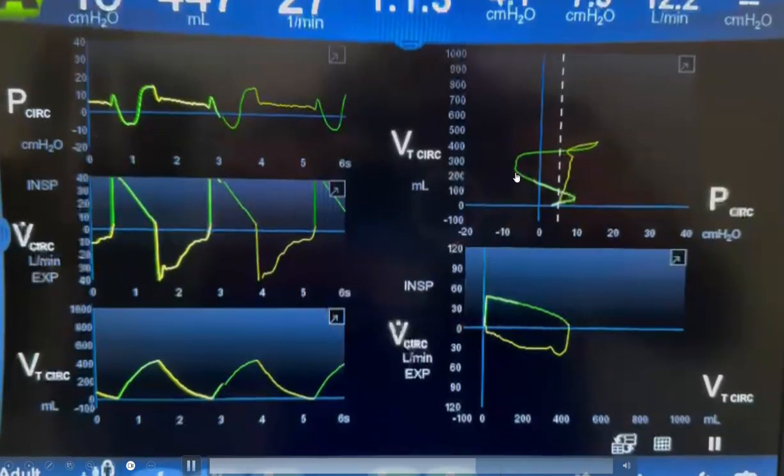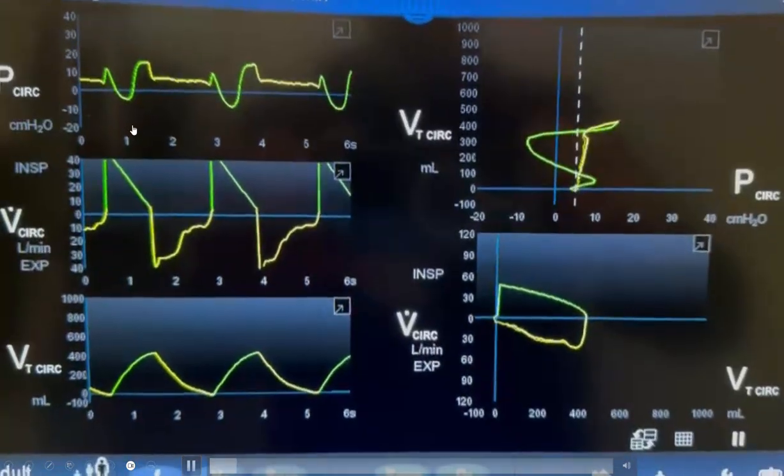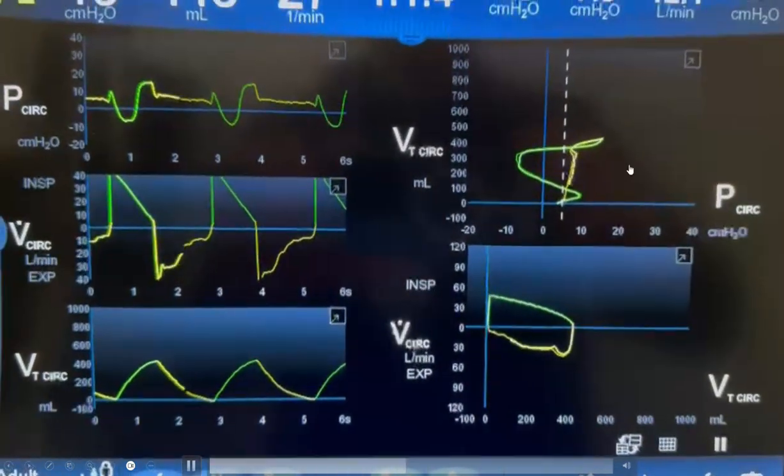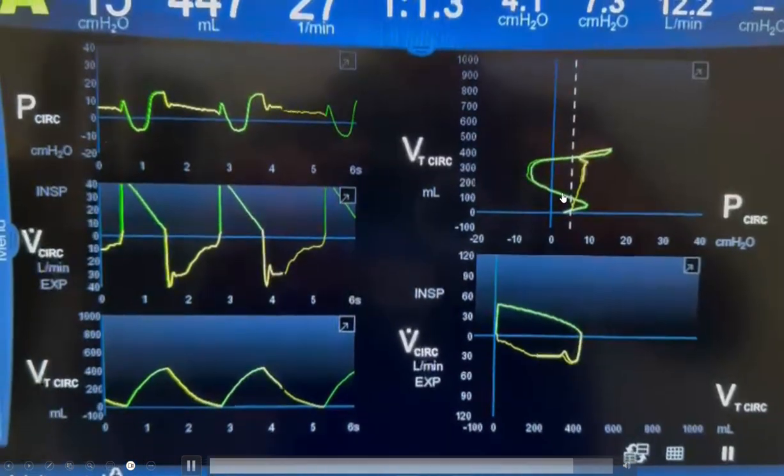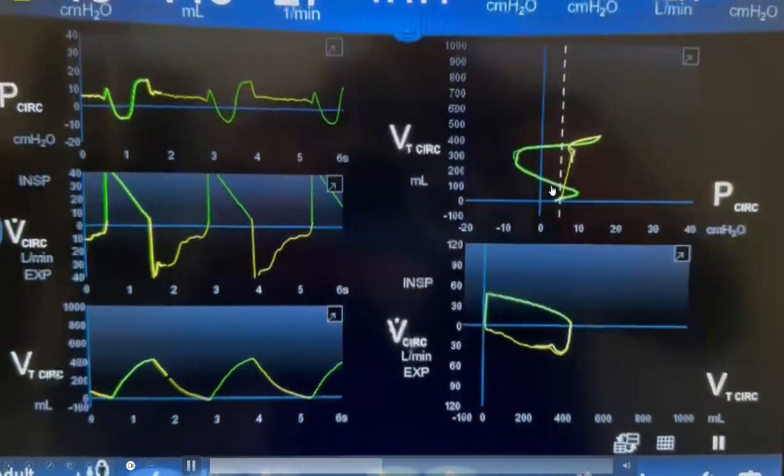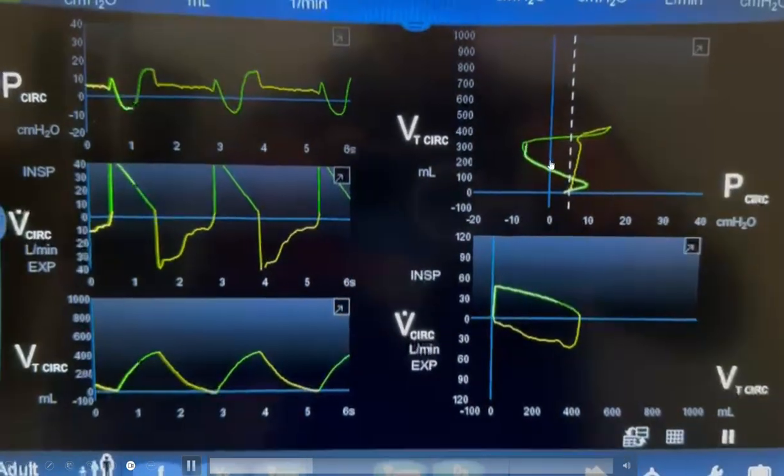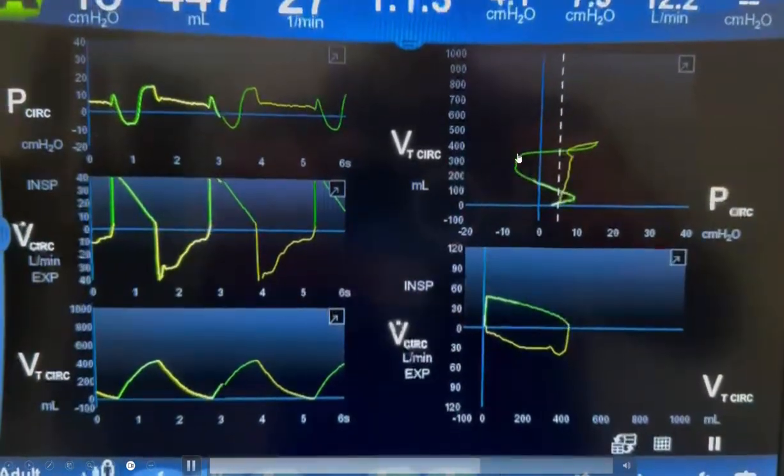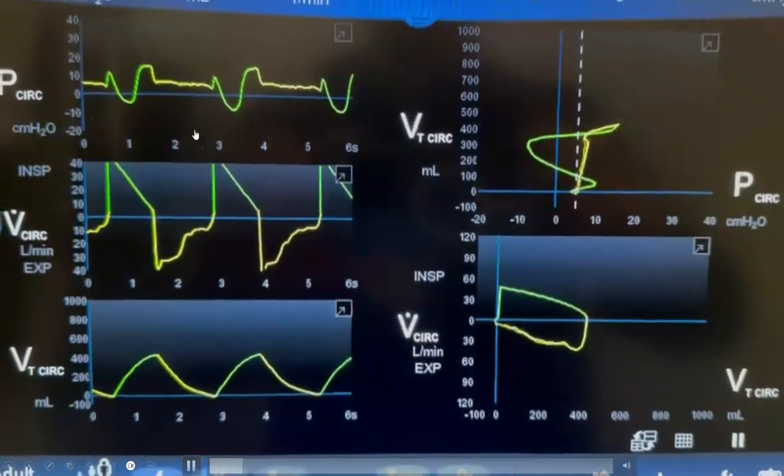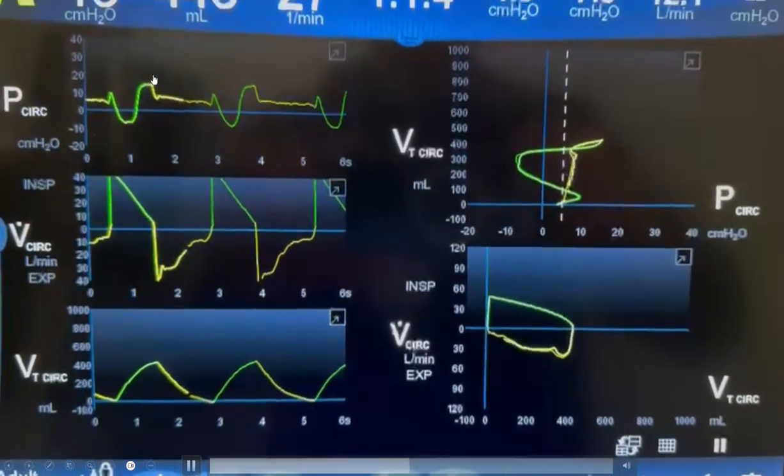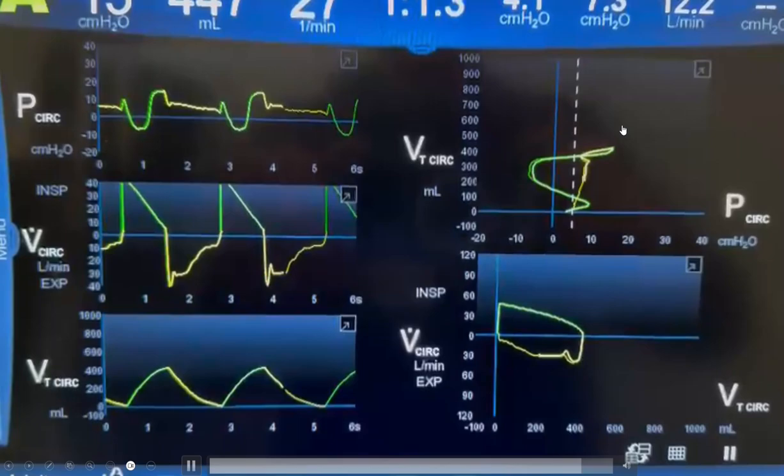This area here correlates with this drop in the pressure. Along with this drop in the pressure, you can see the volume is increased—it goes on the y-axis. The volume is increased, and then at this point the pressure starts to go up again.